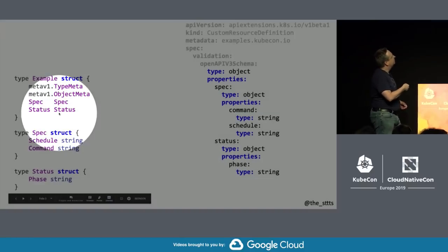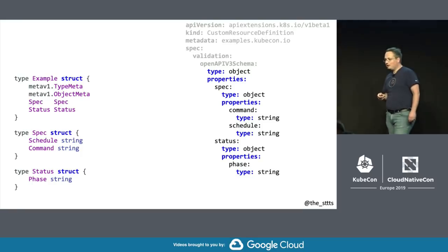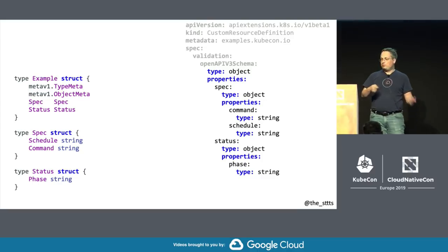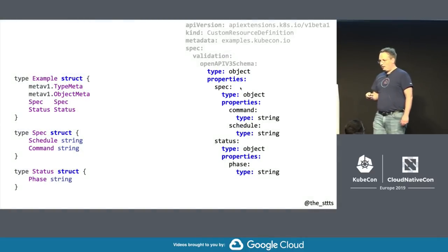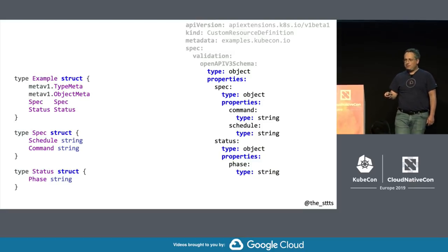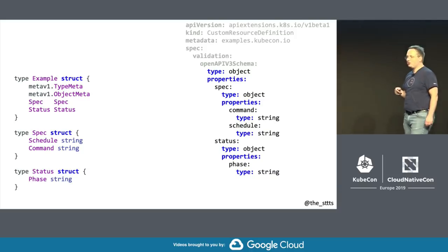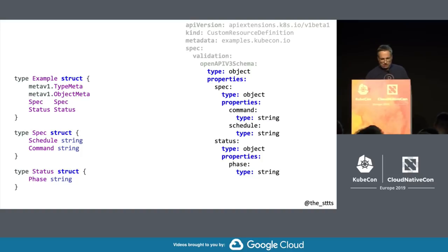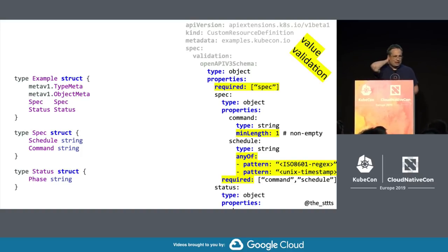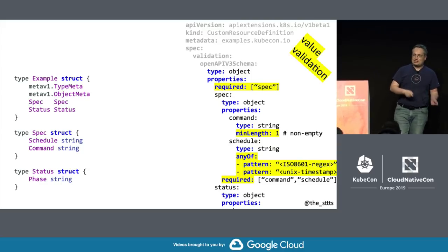Here's an example how we use that. On the left side you have an example — a project with some types, some API types, example structs, and the usual spec and status. Those are translated into OpenAPI, into a specification, a schema on the right side, and you put that into a CRD. I think most of you will know that. This OpenAPI was pretty much unrestricted up to now, and we noticed that you can define pretty crazy types using OpenAPI, which are far from being normal in the Kubernetes ecosystem.